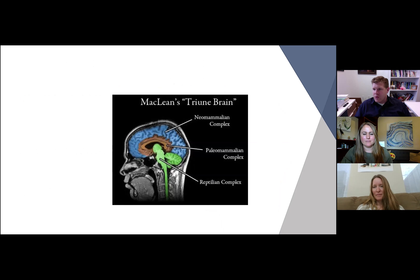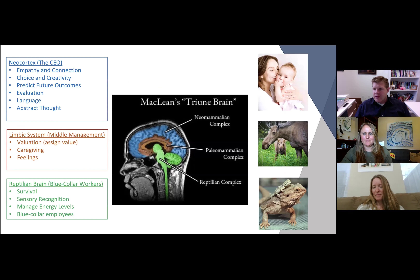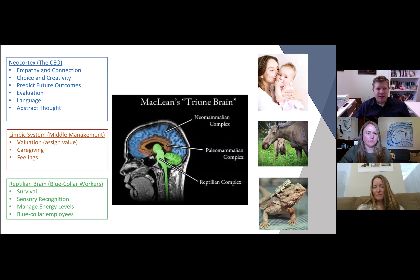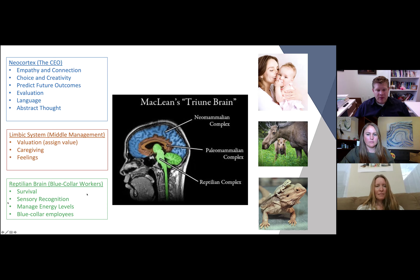This is just a reminder from last time — we've got the three different levels of the brain: the reptilian brain, the mammalian brain, and the neomammalian brain. The neocortex is where we practice empathy, make connections, engage in choice and creativity. It's where we predict future outcomes, evaluation, language, abstract thought. Our limbic system, our mammalian brain, is where we assign value to things, which creates feelings and allows us to be caregiving creatures. And then our reptilian brain is about survival — it keeps us alive in the next 10 to 15 seconds, managing our energy levels, heartbeat, sensory recognition, helping us do what we need to do moment to moment to stay alive.